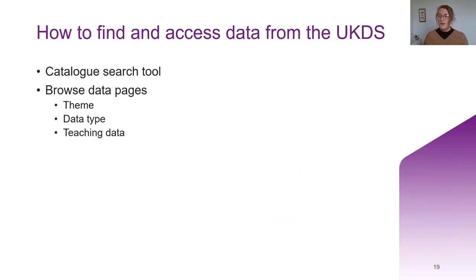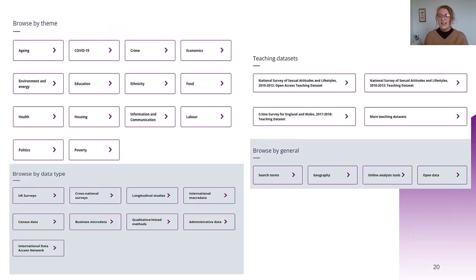Next up are our browse data pages. These pages allow you to browse by themes — topics such as COVID-19, economics, labour, food, health, housing, poverty. You can also browse by data type, so if you are particularly interested in UK surveys, longitudinal data or census data, you can search for those. There's also a section that links to particular teaching datasets, and you can search for geographical data, online analysis tools, and there's also a link to search for open data as well.